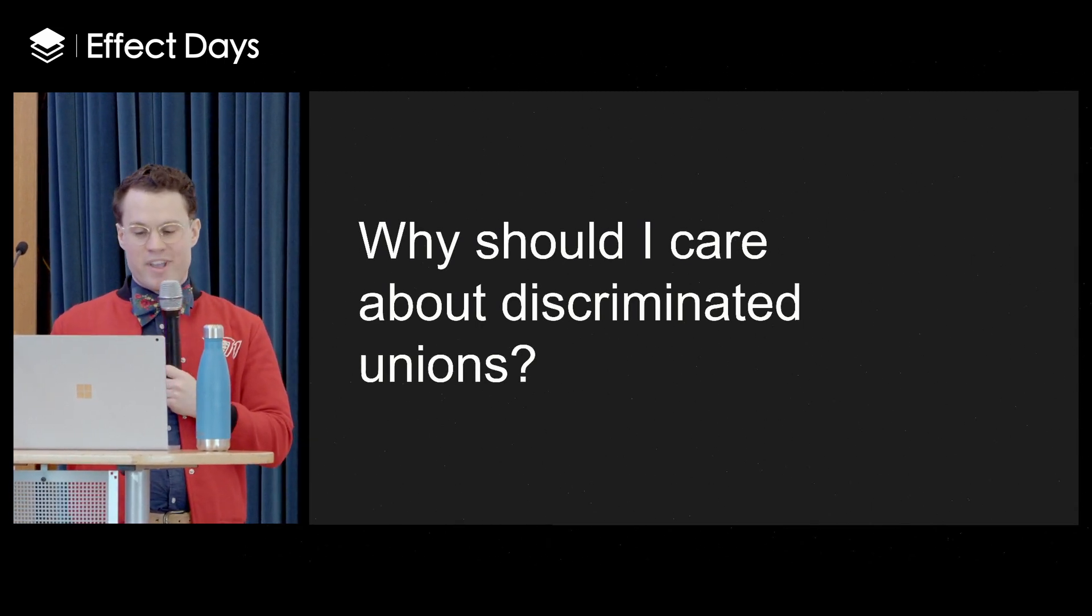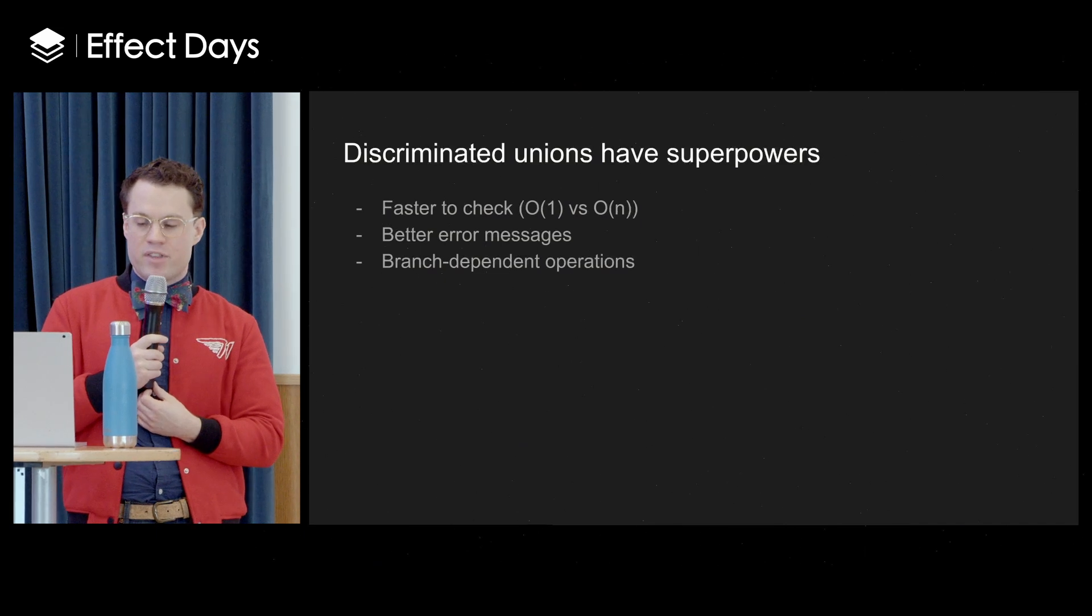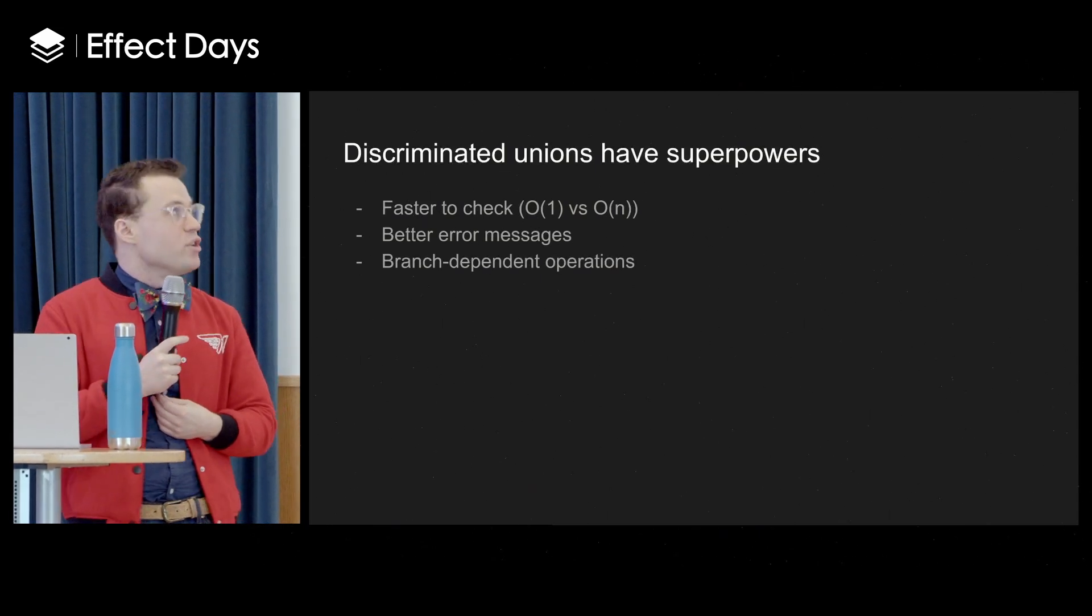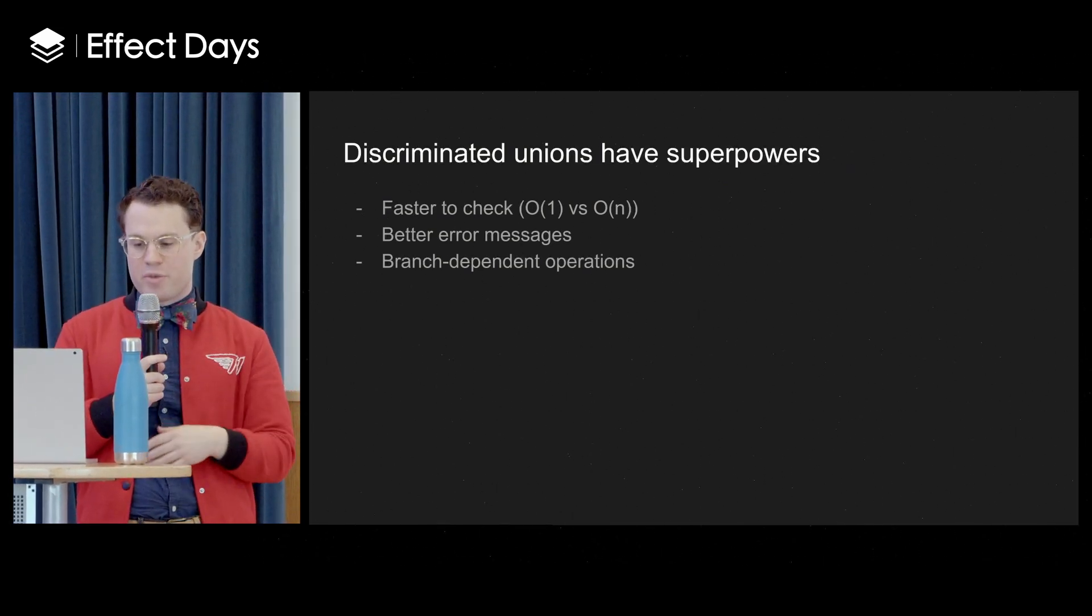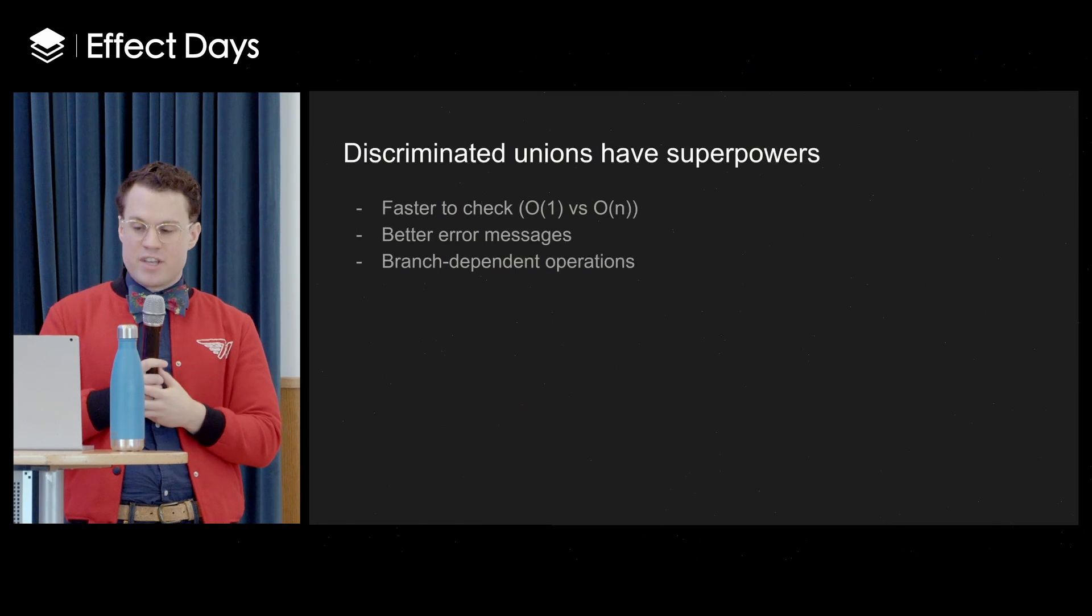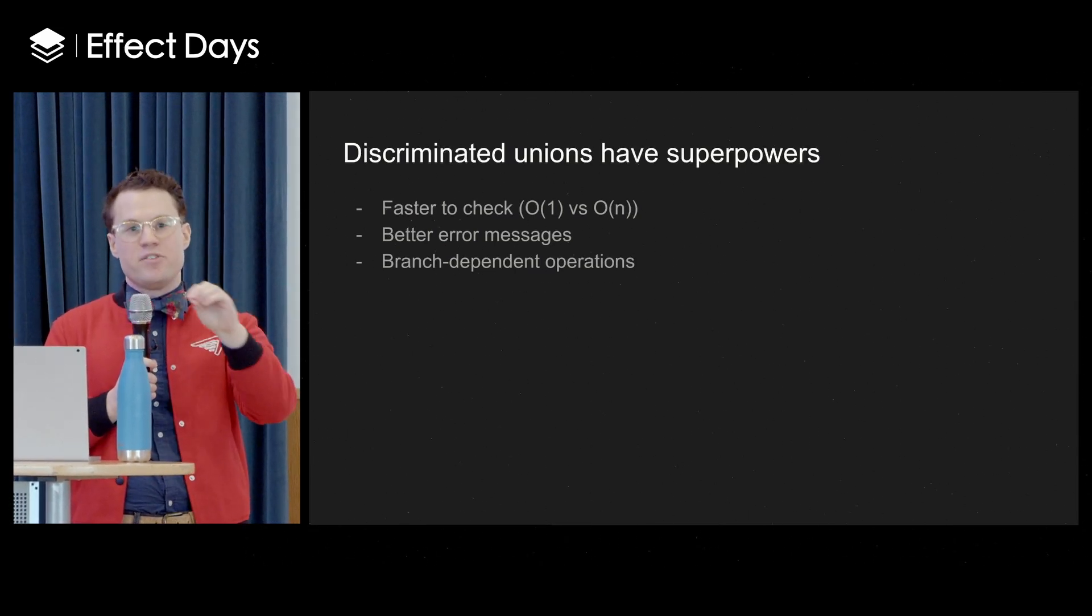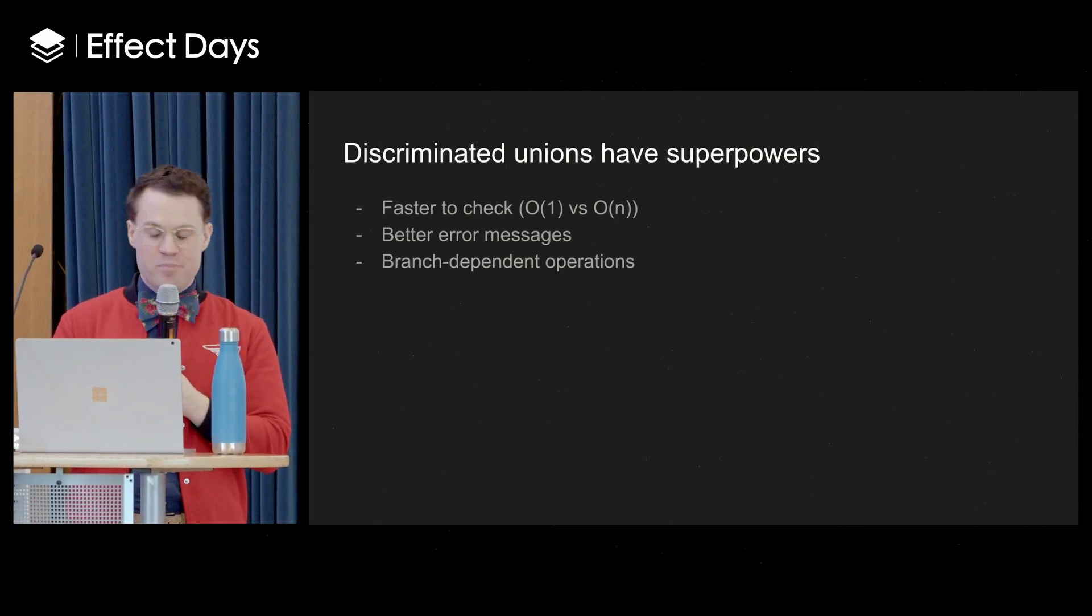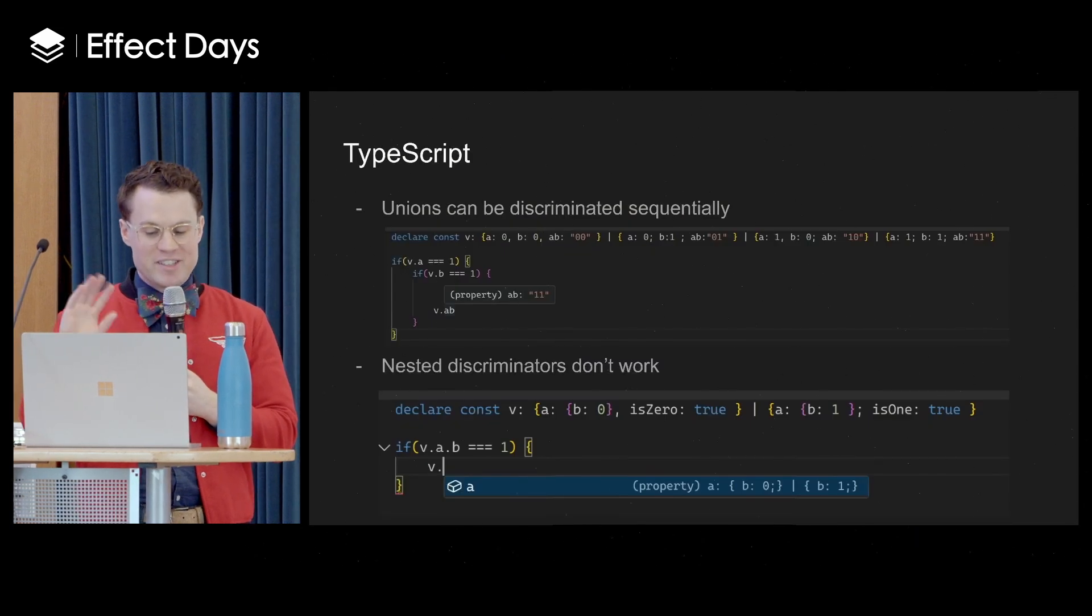It doesn't have to be if you have 10 branches that all branches are discriminatable from one another for this to be useful. Say five are discriminatable, then great, you've just saved yourself half the work of iterating over branches and trying to figure out which branch you're on. So why should you care? Well, hopefully you already care. But if I haven't sold you yet, they're really, really powerful. The most obvious thing is that they can be checked in constant time instead of in linear time with respect to the number of branches on a union. If you're thinking about validation, checking a union with 100 members or 1000 members is going to be a lot faster if you just skip right to the right branch.